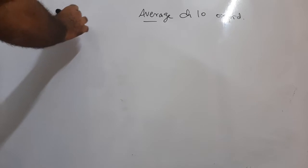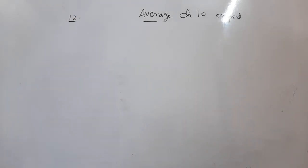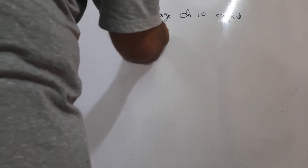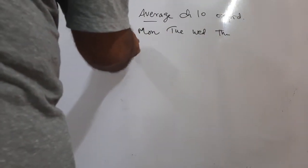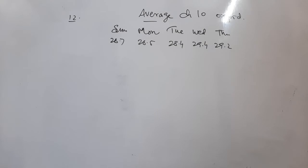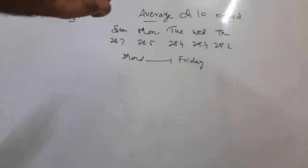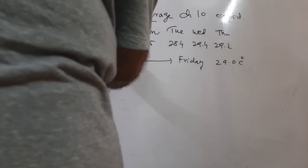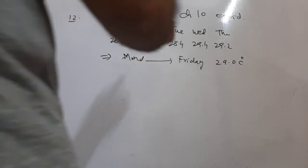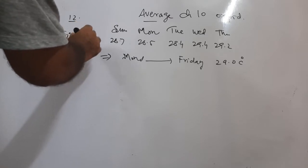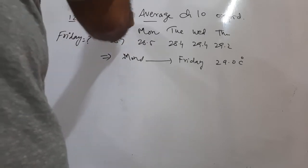We are doing point number 12. It is given that the table shows the daily temperature over five days in March: Sunday 28.7, Monday 28.5, Tuesday 28.4, Wednesday 29.4, and Thursday 29.2 degrees Celsius. The average daily temperature from Monday to Friday was 29. We need to find the temperature on Friday, so Sunday is ignored.